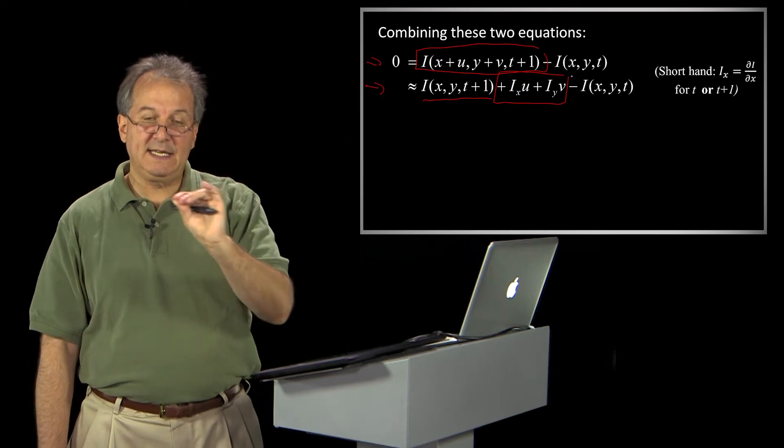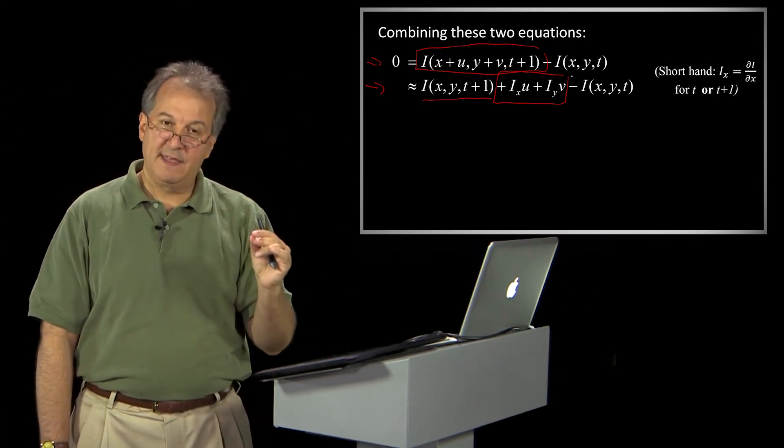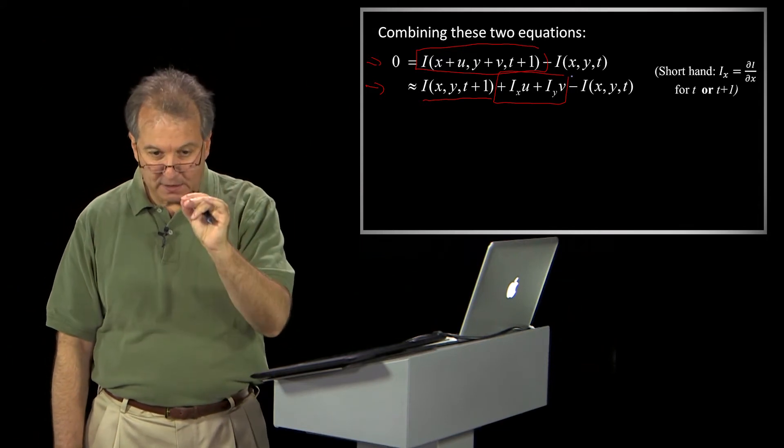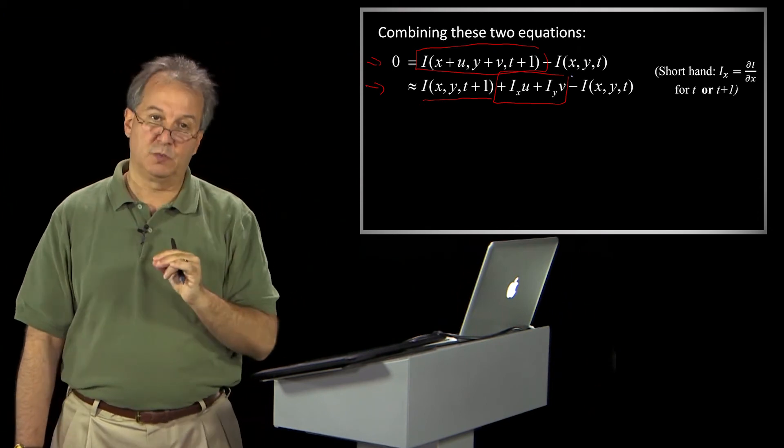doesn't matter. The idea is we're going to assume that things are changing so slowly and so gently that the derivative at a particular point is going to be the same whether I look at t or t plus 1.